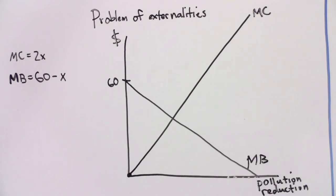The cost and benefit of pollution reduction illustrates the problem posed by environmental externalities. How much will your neighbor voluntarily reduce his pollution? The answer is: not at all. Reducing pollution by even one pound costs him $2, so he won't do it if he doesn't have to. The problem here is that your neighbor is ignoring the environmental externality that his pollution imposes upon you. After all, reducing pollution by one pound is worth $59 to you. Your neighbor will not voluntarily reduce his pollution, but this outcome is inefficient or suboptimal.